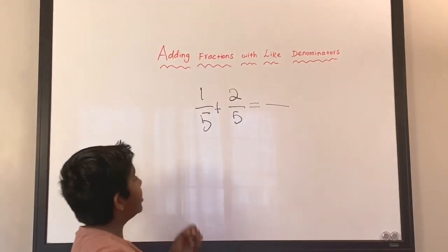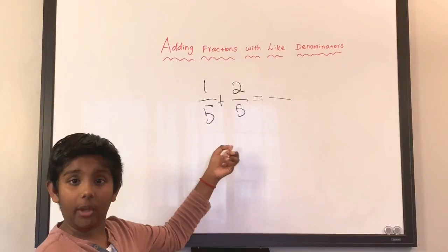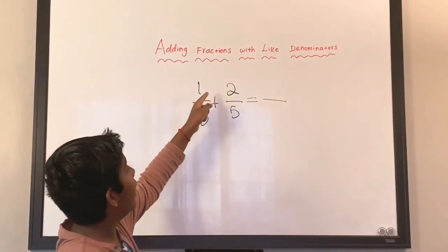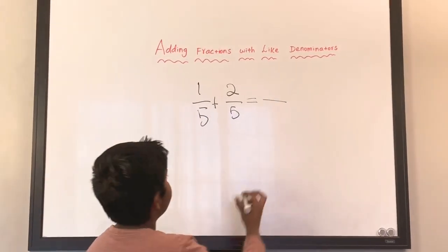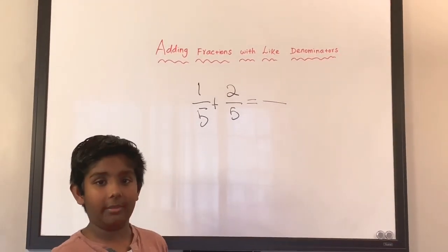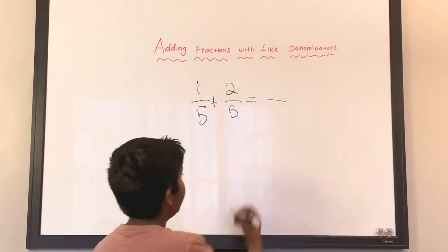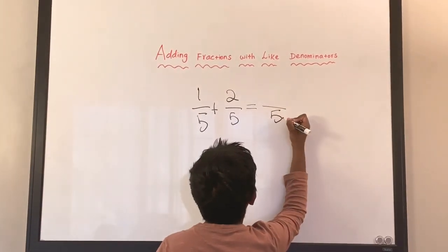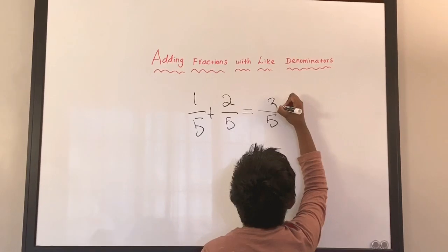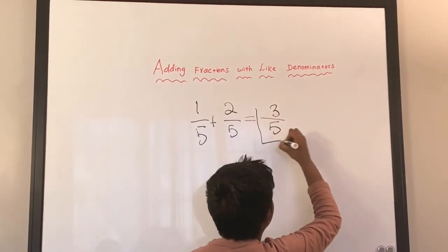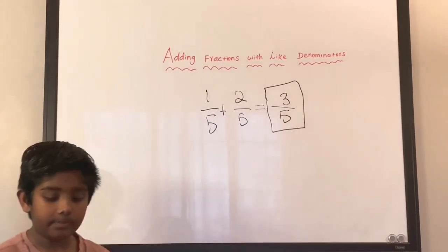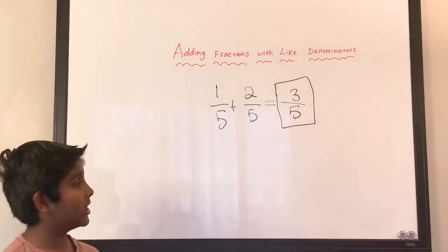We should never add or subtract the denominators — we should only add or subtract the numerators. So five and five, we just keep that denominator the same, put five, and then we add one plus two equals three. So the answer is three over five. Okay, let me show you some more examples.